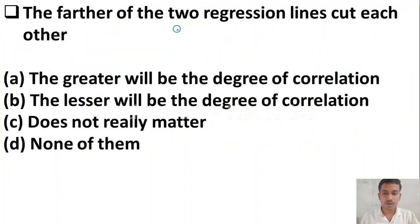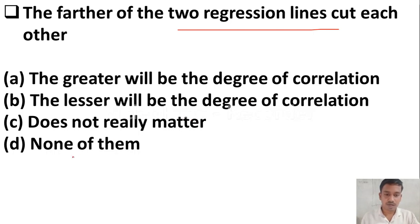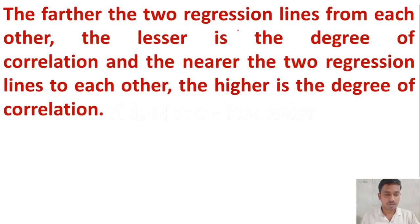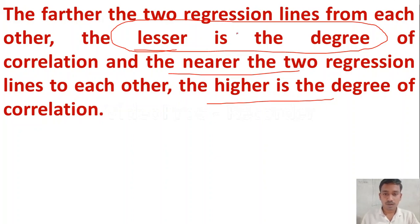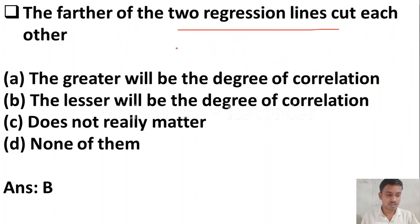The next question: the further the two regression lines cut each other — option A the greater will be the degree of correlation, option B the lesser will be the degree of correlation, option C does not really matter, option D none of the above. The further the two regression lines are from each other, the lesser is the degree of correlation. Conversely, the nearer the regression lines, the higher the degree of correlation. So option B is the right answer.